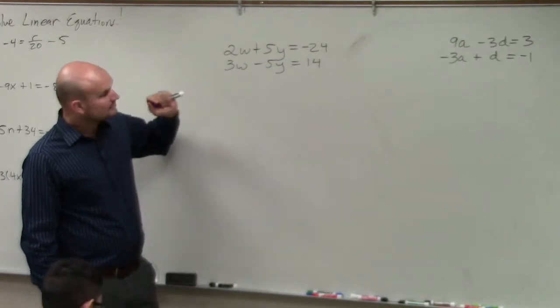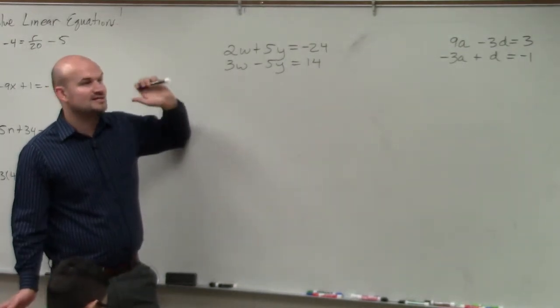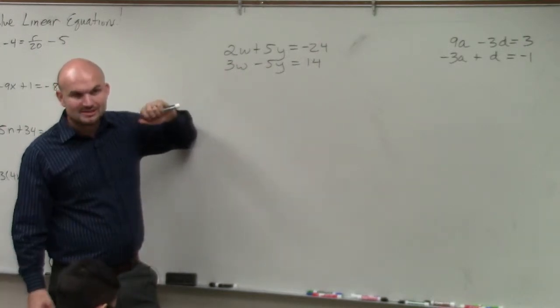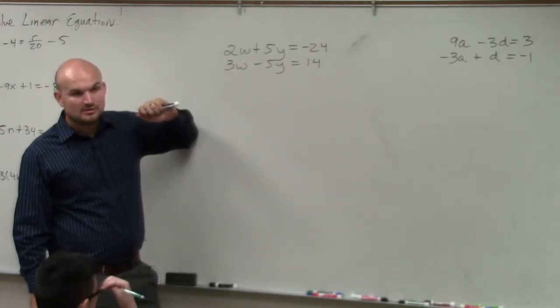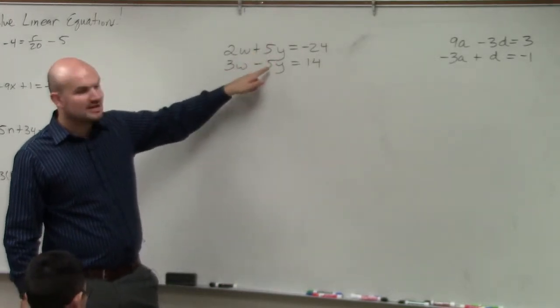Step number two is identify the variable that has the same coefficient, plus or minus, or both positive or both negative. So what is my variable that has the exact same coefficient? Yeah, the y. y has a coefficient of 5, and y has a coefficient of negative 5.